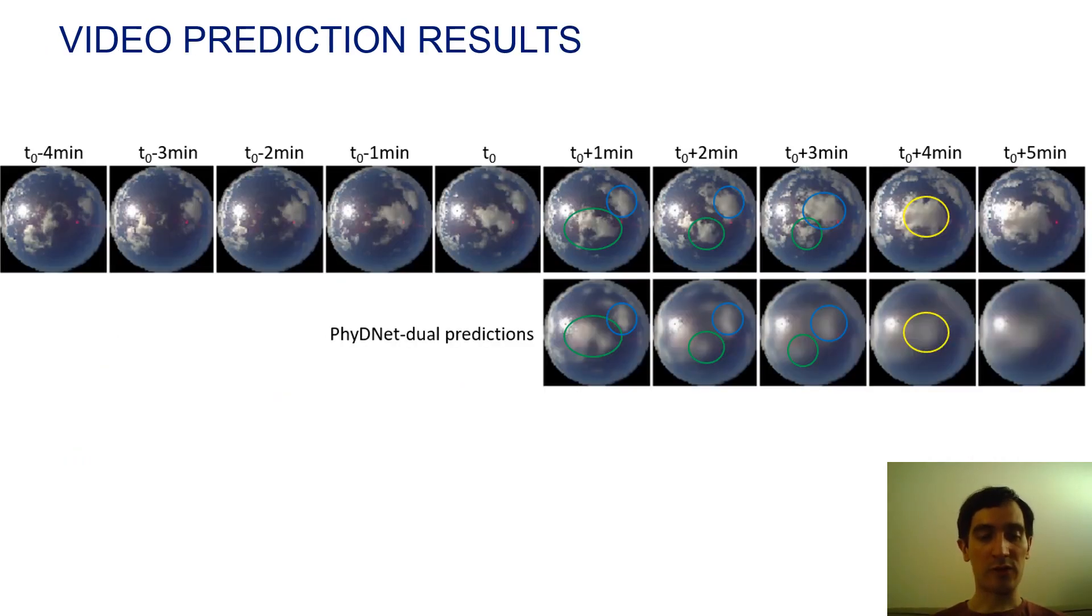We also see here some qualitative video prediction results. The model takes 5 minutes of past images and predicts the 5 following images. We can see that this problem is very challenging because in 5 minutes there is a large cloud motion.